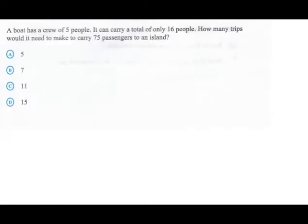A boat has a crew of five people. It can carry a total of sixteen people. How many trips would it need to make to carry seventy-five passengers to an island? Let's circle five crew. Can carry a maximum of sixteen people and you need to take over seventy-five passengers. So on each trip you have five crew members.